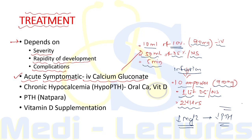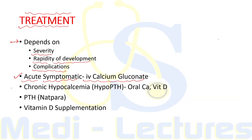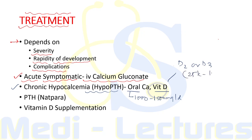It is important to note that hypomagnesemia should also be corrected, otherwise calcium treatment will not work, as hypomagnesemia leads to decreased parathyroid gland function. Chronic hypocalcemia due to hypoparathyroidism is treated with oral calcium — 1000 to 1500 mg per day of elemental calcium — and oral vitamin D, either vitamin D2 or D3, at 25,000 to 100,000 units daily.